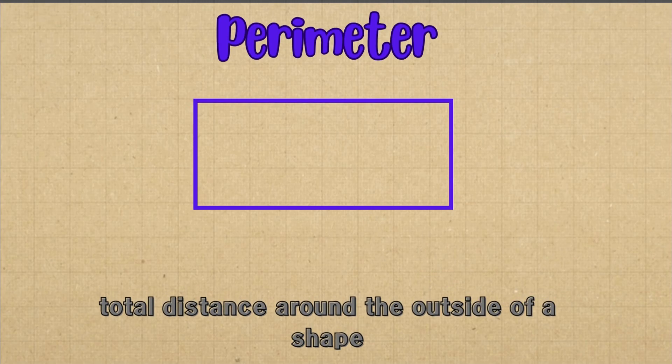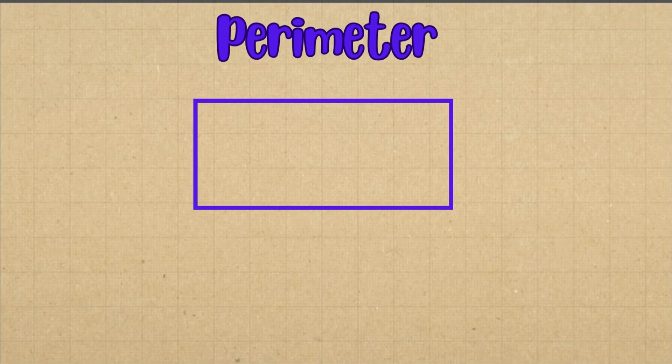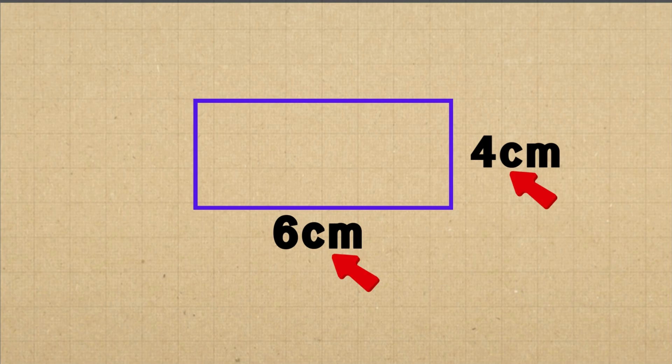That means you can find the perimeter by adding up the lengths of all its sides. Let's say we have a rectangle with a length of 6 cm and a width of 4 cm. To find the perimeter, we add all the sides together. Since a rectangle has 4 sides, we have 2 lengths and 2 widths.